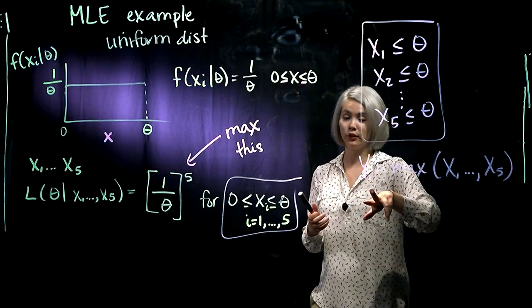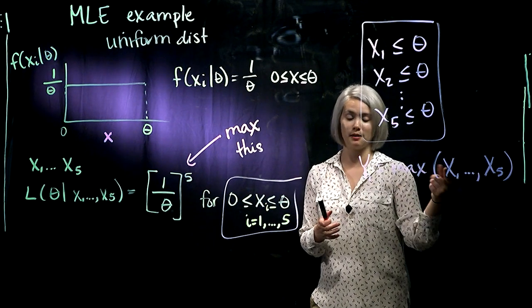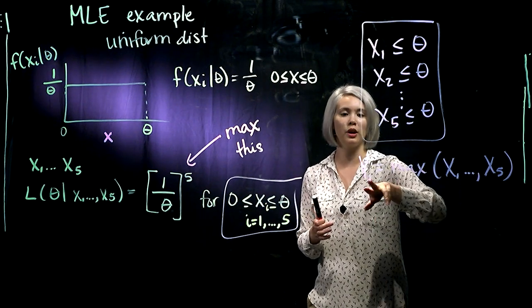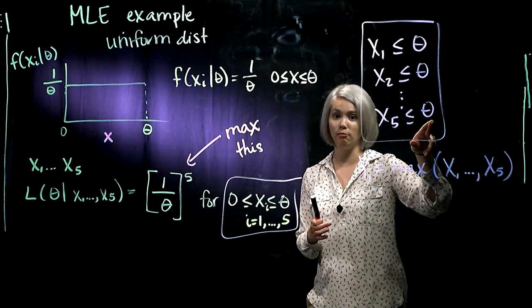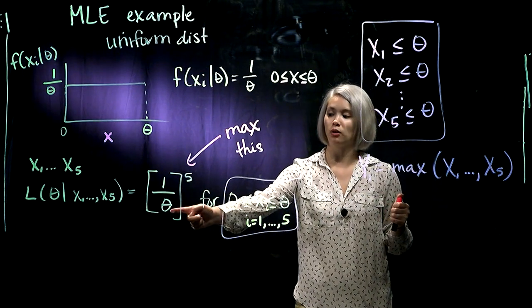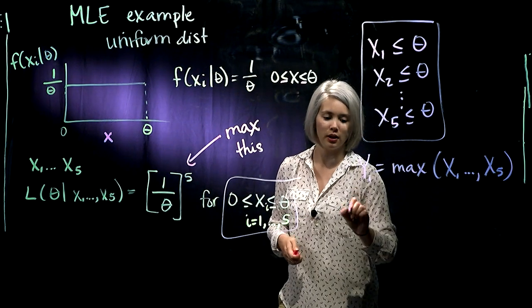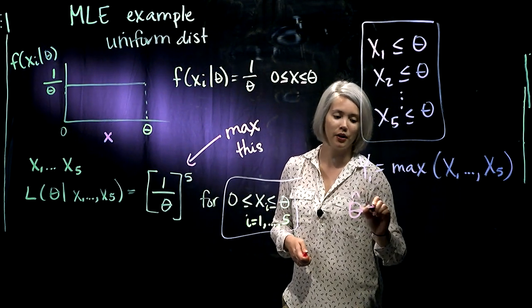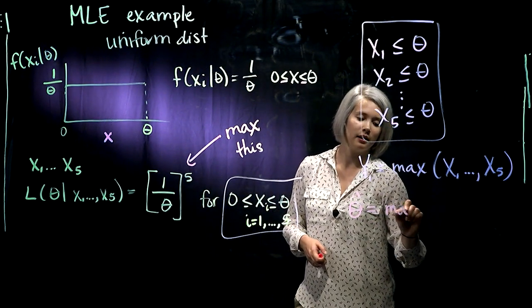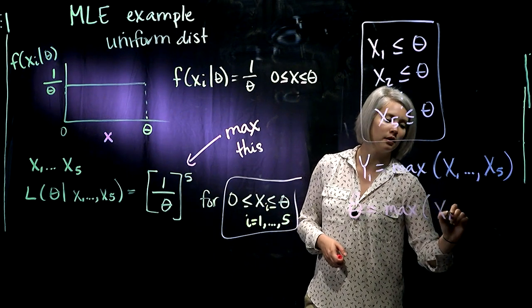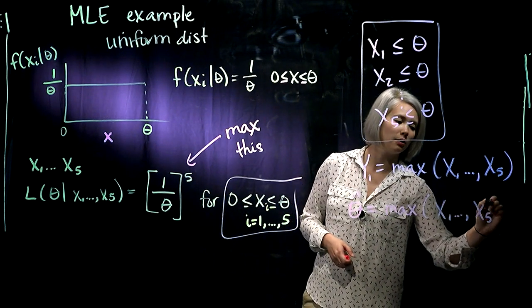Then it will definitely be true, because y1 is the max, it will definitely be true that y1 is less than or equal to theta. And so to maximize this likelihood, let's use a maximum likelihood estimator of theta hat is the max of your data points.